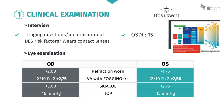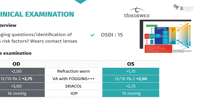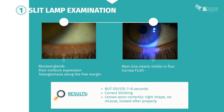Intraocular pressure is normal. Your slit lamp examination at a high magnification reveals blocked meibomian glands and telangiectasia along the free margin. When you palpate the eyelid you notice poor meibom expression. When you instill a drop of fluorescence the Marx's line is clearly visible but the cornea remains fluo negative. Breakup time is between 7 and 8 seconds for both eyes and blinking is correct.